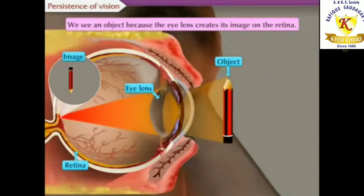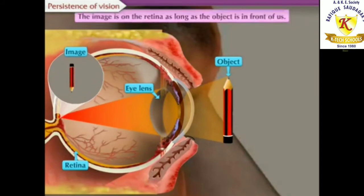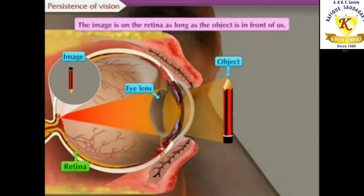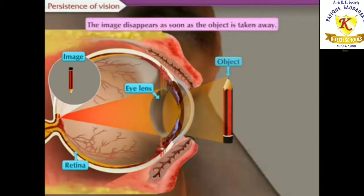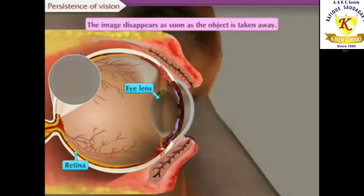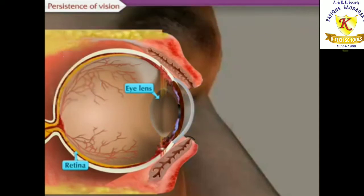We can see an object because the eye lens creates its image on the retina. The image is on the retina as long as the object is in front of us. The image disappears as soon as the object is taken away.